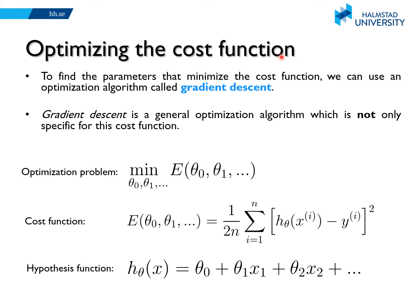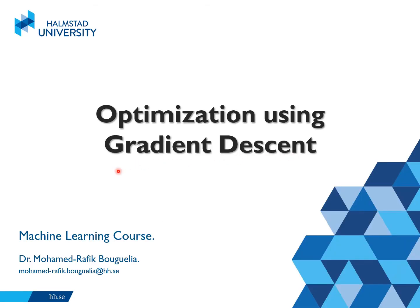Now that we know what our cost function is, let's see how to optimize it — how to find the parameters that minimize this cost. One way to do that is to use an algorithm called gradient descent. Gradient descent is a general optimization algorithm — it's not only specific to this cost function; we can use it to optimize other cost functions as well. Our optimization problem looks like this: we have the mean squared error cost function and our hypothesis function, and we want to find the parameters theta 0, theta 1 and so on that give the minimum possible value for this cost.